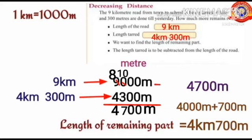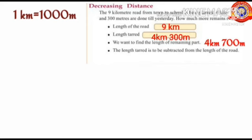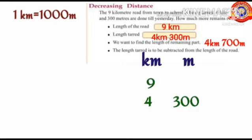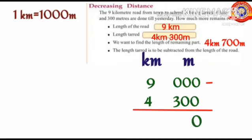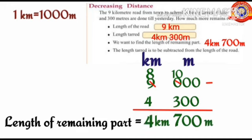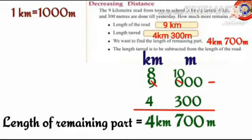So the length of the remaining part equals 4 kilometers and 700 meters. There is another way to find the answer. We can simply subtract 4 kilometers and 300 meters from 9 kilometers directly. Since there is nothing in the place of meters, we put zeros. We borrow as before: 10 minus 3 is 7, and 8 minus 4 is 4, giving 4 kilometers and 700 meters — the same answer.